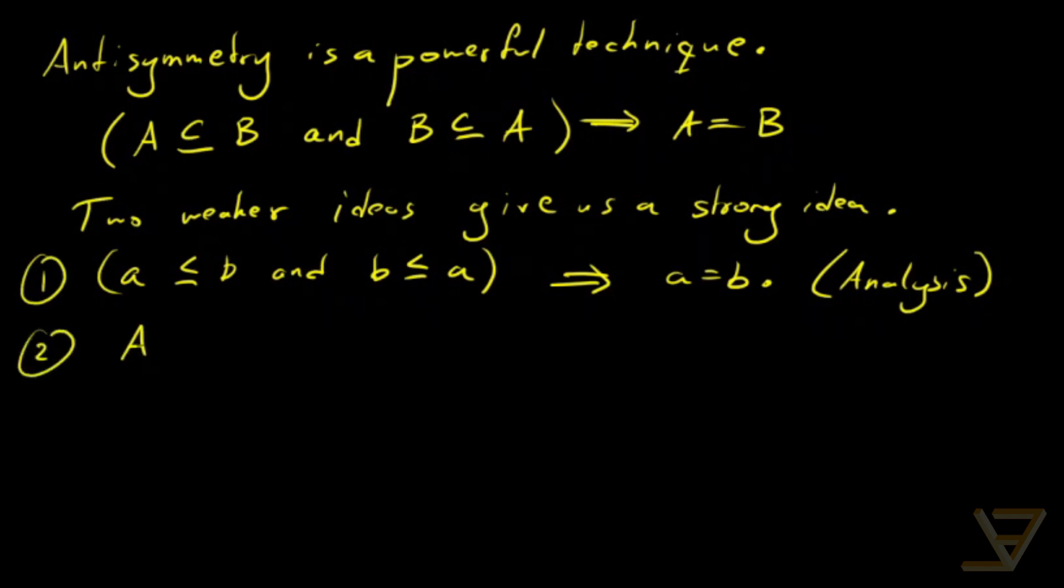So that's one example. Another example is what we just proved, that if A is a subset of B and B is a subset of A, then A is equal to B. And we need this for locus results in geometry, for example.